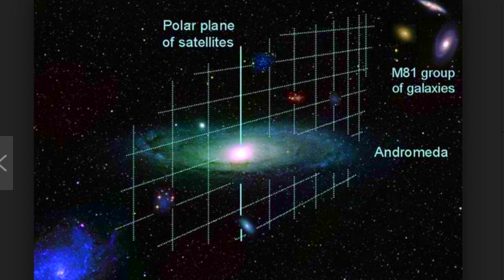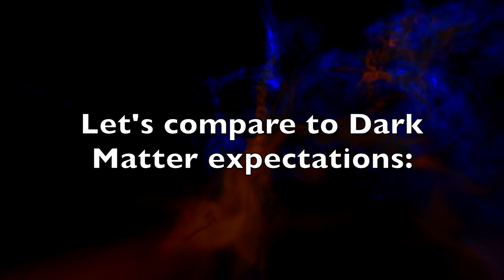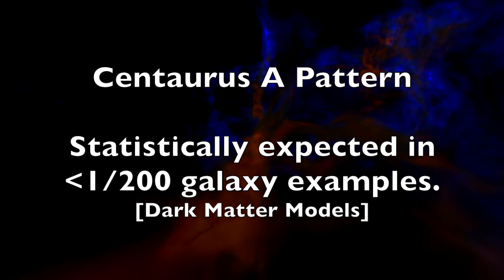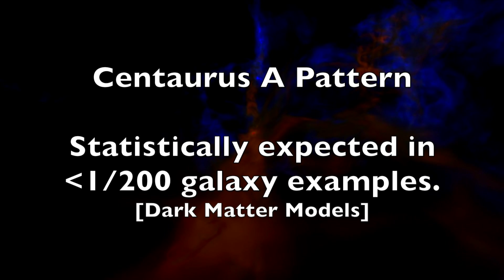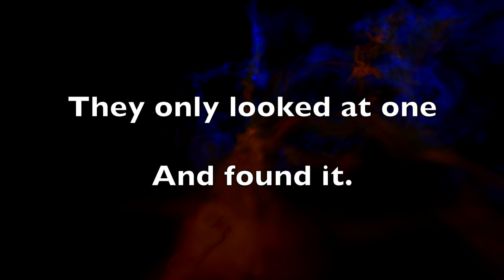This can be compared to our cosmological expectations. Basically, you have a computer simulation, you set it up for Centaurus A, and you find it occurs in fewer than one in 200 cases. We should, on average, observe 200 of these kinds of systems before we find one which is as extreme as the one we see. But we only looked at one and already found it.